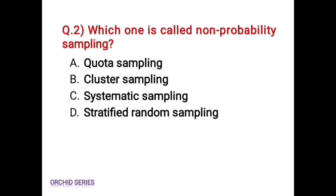Next question: which one is called non-probability sampling? Options are: quota sampling, cluster sampling, systematic sampling, and stratified random sampling. The correct answer is Option A, quota sampling. Quota sampling is called non-probability sampling.